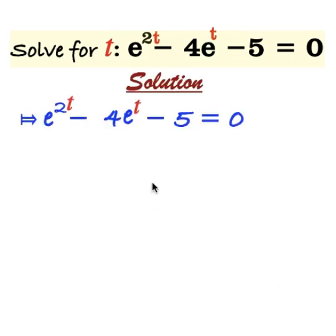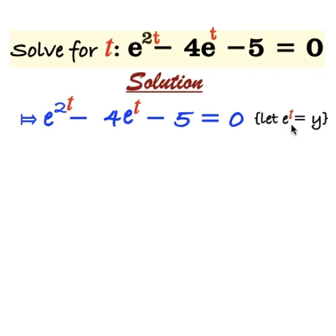Solve for t. Euler's constant raised to the power 2t, minus 4 Euler's constant raised to the power t, minus 5 is equal to 0. To simplify, first, let Euler's constant raised to the power t equal to y.